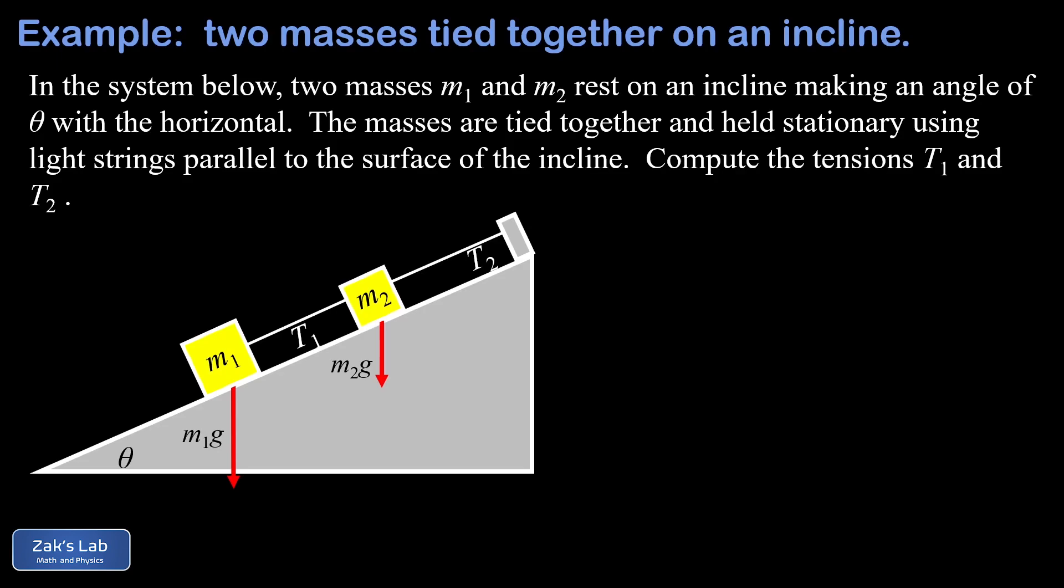And the weight of M1 is just M1g. The weight of M2 is M2g. Notice that M1 was drawn qualitatively larger than M2. So I went ahead and made the weight vector longer for that, indicating that it has a larger weight. That's not going to affect whether or not our final solution works. But it's nice to just make things qualitatively consistent.